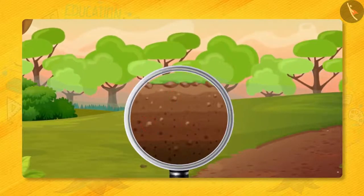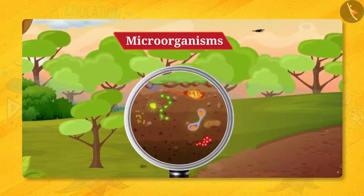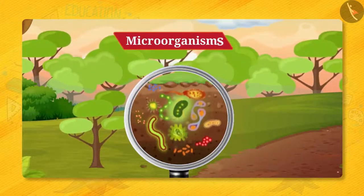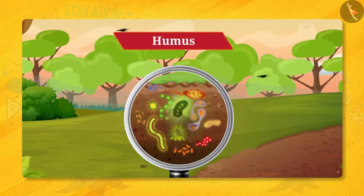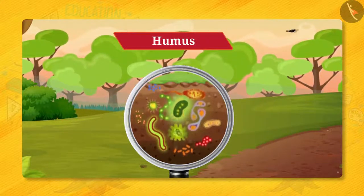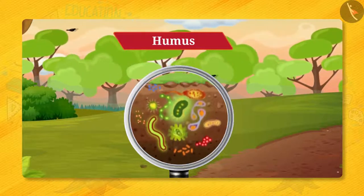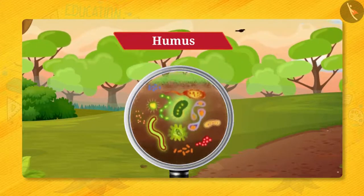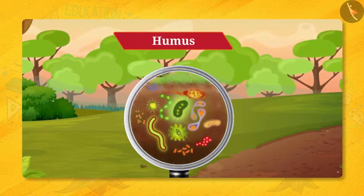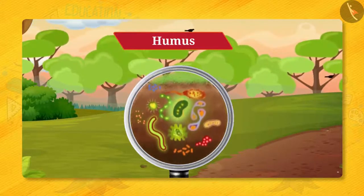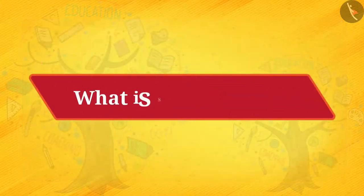In addition to small particles, soil consists of microorganisms and humus. Humus is nothing but the decay of living organisms, which makes the soil porous. The organisms living in soil cannot be seen with the unaided eyes, but can be seen with the help of a microscope.